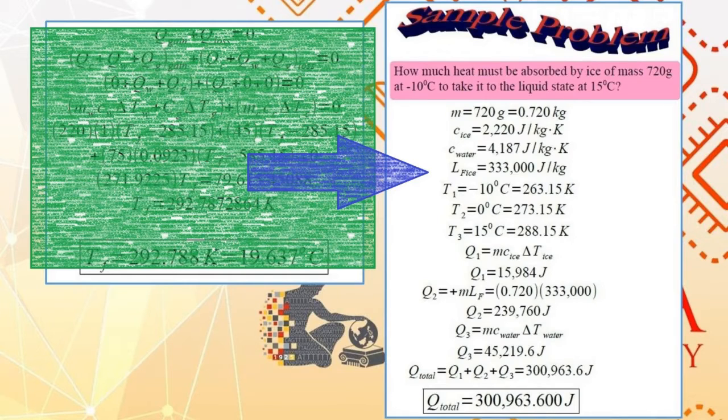When it melts, it's still basically the same object. Therefore, there's only one mass, M, 720 grams. The mass of the ice will still be 720 grams after it melts.